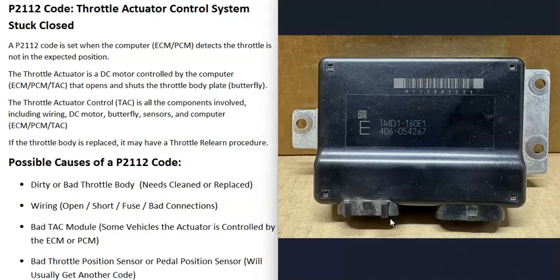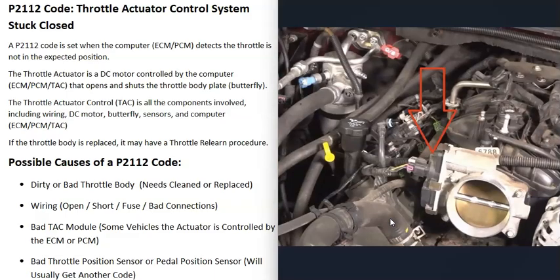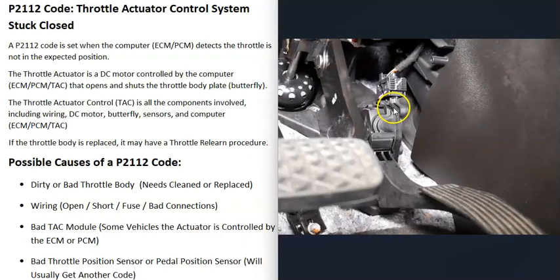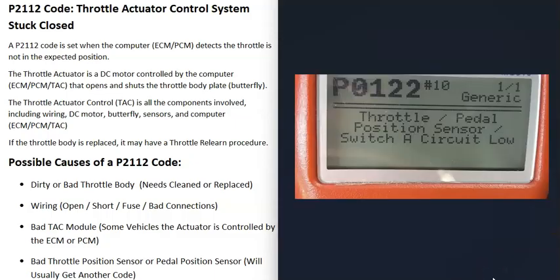Usually if one of these computer modules goes bad, you'll be getting a lot of other codes as well. If you do think you have a bad computer module, be sure the battery is charged good, there are no issues there, all connections are good, and check the alternator output. All these computer modules need a good, stable power supply, and if they don't have it, it can cause them to have issues. The last cause on the list is a bad sensor — either a bad throttle position sensor on the throttle body or a bad pedal position sensor down on the gas pedal. Usually if one of these sensors goes bad you'll get another code — for example, a P0122 code for throttle pedal position sensor switch A circuit low — so check that sensor for issues.